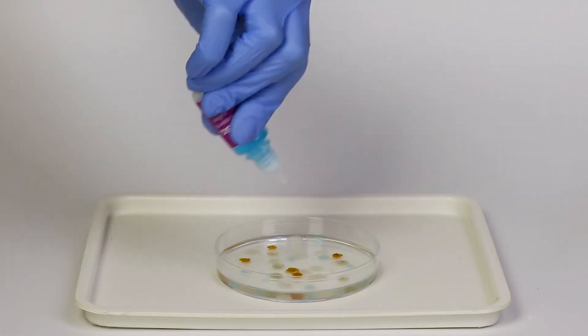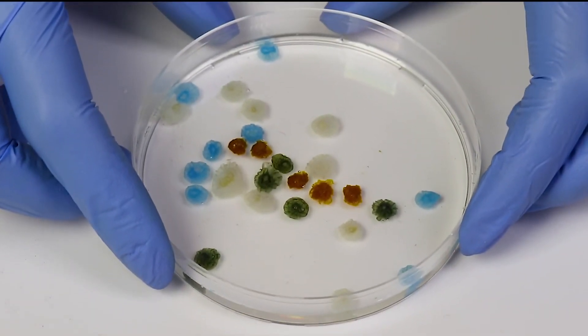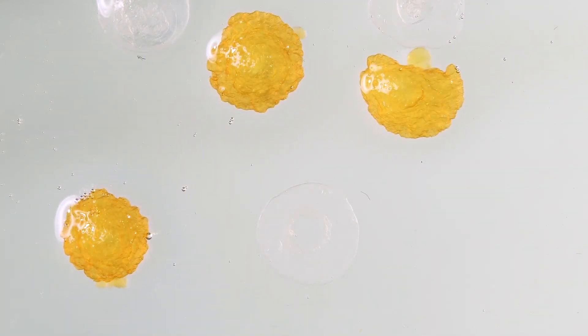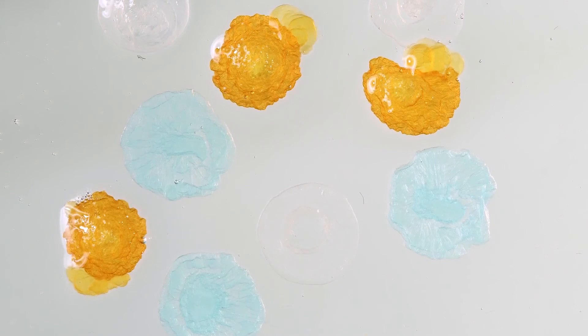Manganese, copper and iron ions in each of the salt solutions react with the liquid glass. They form water-insoluble silicates, which look very similar to little jellyfish.